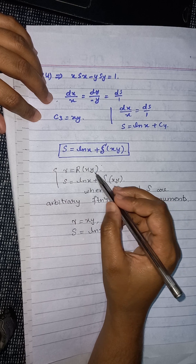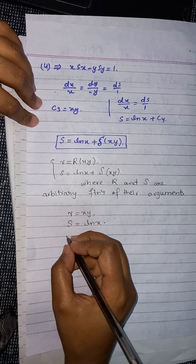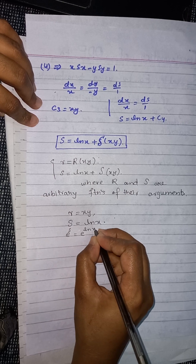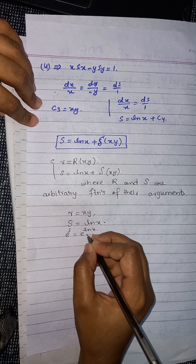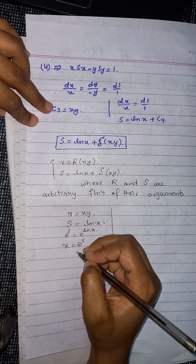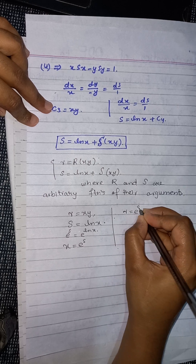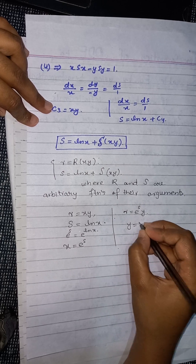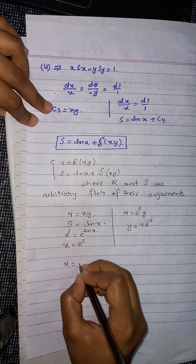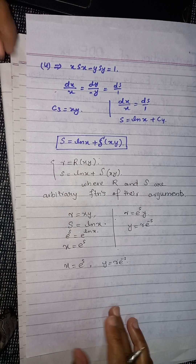In this transformation we can choose any value for r and s. If we find the value of x by taking exponential on both sides of s equals ln(x), we get e^s equals e^(ln x), and since they are inverses of each other, x equals e^s. Substituting e^s into r equals x·y gives r equals e^s · y, so y equals r · e^(−s). Therefore, x equals e^s and y equals r · e^(−s).